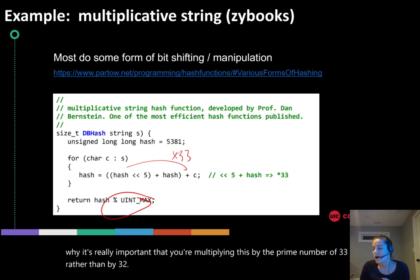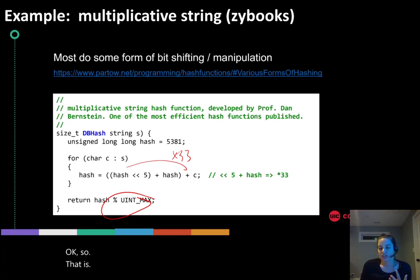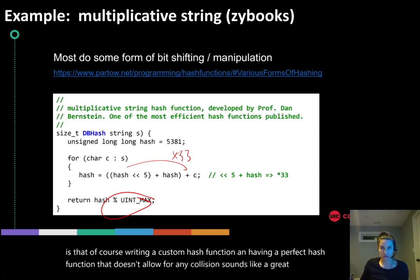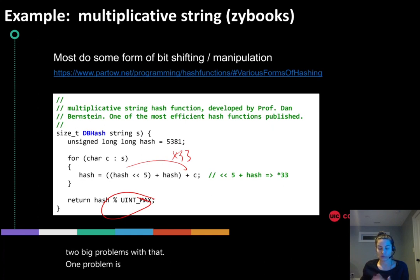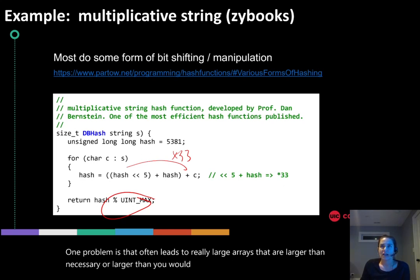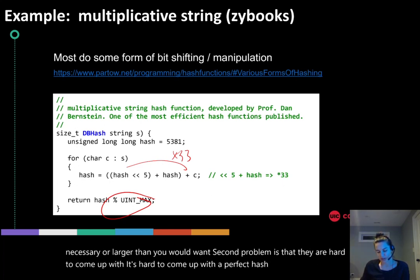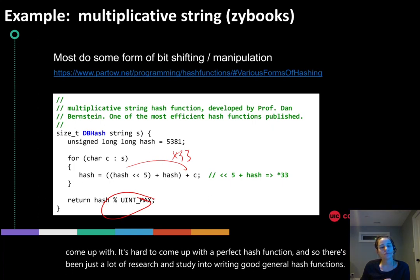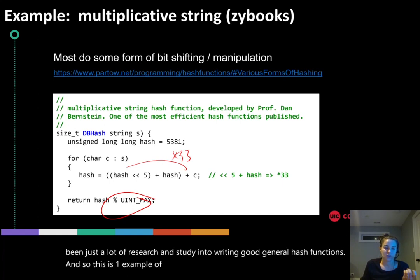That is a little bit about general hash functions. I hope you just get the idea of it, which is that of course writing a custom hash function and having a perfect hash function that doesn't allow for any collisions sounds like a great idea. But there's two big problems with that: one problem is that it often leads to really large arrays that are larger than necessary, and the second problem is that they're hard to come up with. So there's been a lot of research and study into writing good general hash functions, and this is one example of them, particularly for a string.